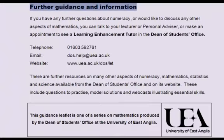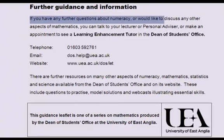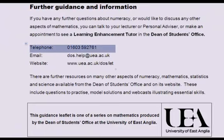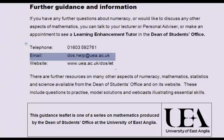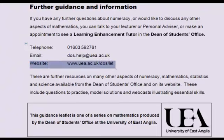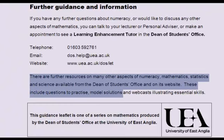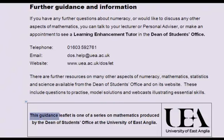Further guidance and information. If you have any further questions about numeracy or would like to discuss any other aspects of mathematics, you can talk to your lecturer or personal advisor, or make an appointment to see a Learning Enhancement Tutor in the Dean of Students Office. You can telephone 01603 592761, email dos.help@uea.ac.uk, or visit the website at www.uea.ac.uk. There are further resources on numeracy, mathematics, statistics, and science available from the Dean of Students Office and on its website, including questions to practice, model solutions, and webcasts illustrating essential skills.